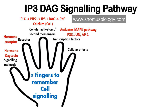The fifth and most important parameter is the cellular effect. The IP3/DAG signaling pathway produces many effects, including cellular proliferation and apoptosis of the endometrium during menstruation. Since we're dealing with oxytocin, this hormone is linked to apoptosis of the endometrium during menstruation, which regulates the menstrual process, as well as cellular proliferation.